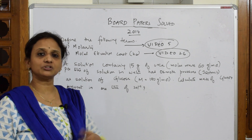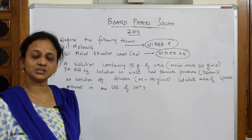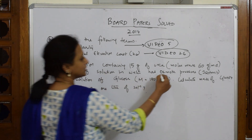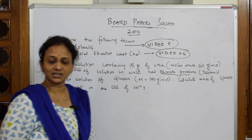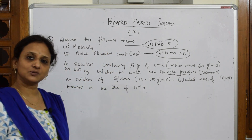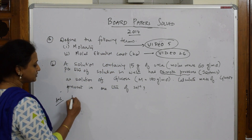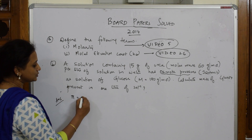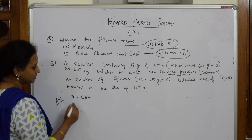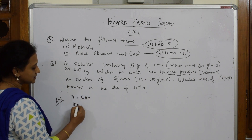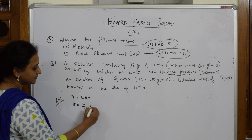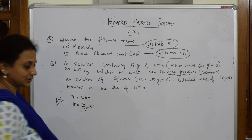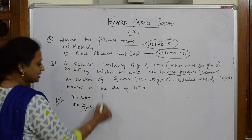The concept is basically revolving around osmotic pressure. Since you see the word osmotic pressure, immediately write the formula — the formula also carries marks. The formula to use is: π = CRT, and further π = (n/V)RT.